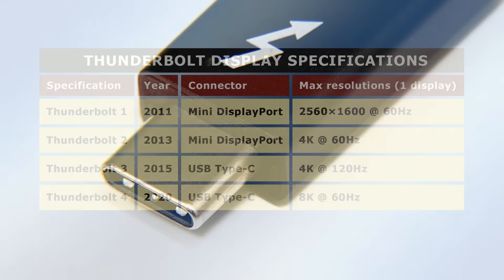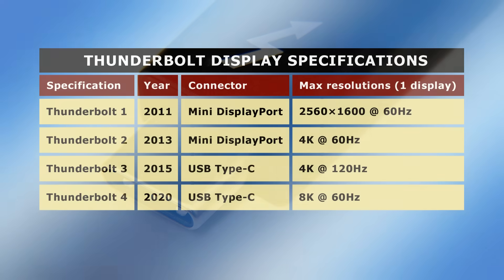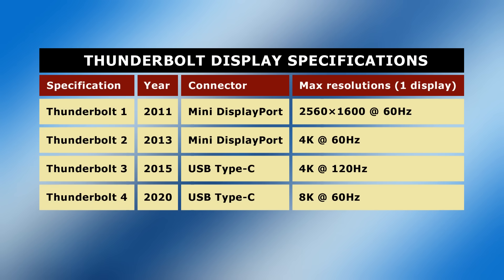As with other display connectors, maximum resolutions and frame rates have been upgraded over the years, with Thunderbolt 4 ports supporting up to one 8K 60Hz display, two 4K 60Hz displays, or one 4K 120Hz display. Such displays may have either a Thunderbolt or a DisplayPort connector, or an active adapter may be used to connect HDMI, DVI, or VGA monitors.